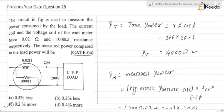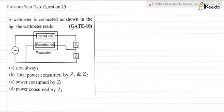This is about previous year GATE question number 28. This question is from the GATE 2004 examination. Previous year GATE question number 29. Let us read the question. A watt meter is connected as shown in the figure. The watt meter reads — options: (A) 0 always, (B) total power consumed by Z1 and Z2, (C) power consumed by Z1, (D) power consumed by Z2.